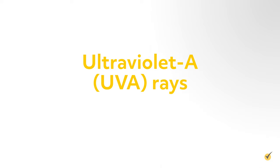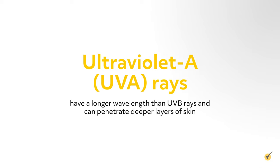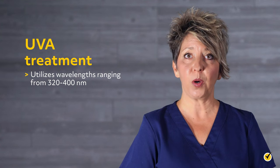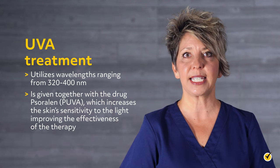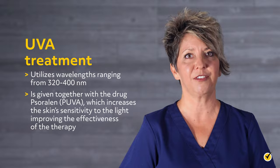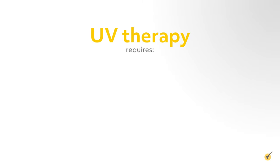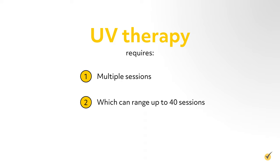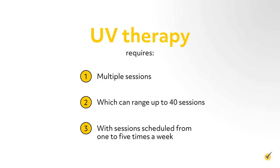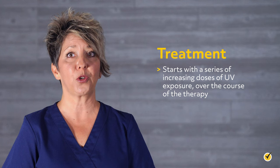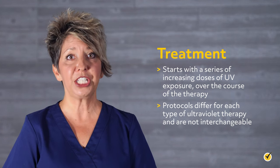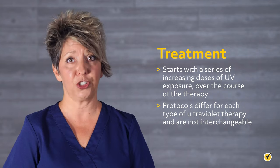Ultraviolet A rays, on the other hand, have a longer wavelength than UVB rays and can penetrate deeper layers of skin. UVA treatment utilizes wavelengths ranging from 320 to 400 nanometers and is given together with the drug psoralen, which increases the skin's sensitivity to the light, improving the effectiveness of the therapy. UV therapy requires multiple sessions, which can range up to 40 sessions, with sessions scheduled from 1 to 5 times a week. Treatment starts with a series of increasing doses of UV exposure, and protocols differ for each type of ultraviolet therapy and are not interchangeable.